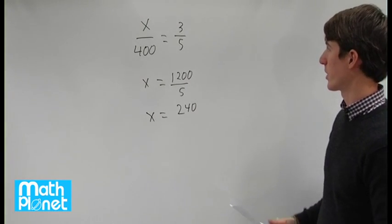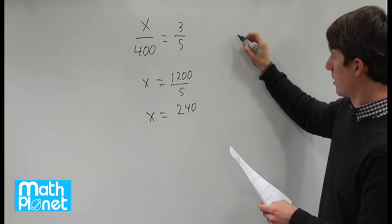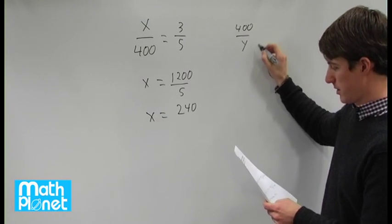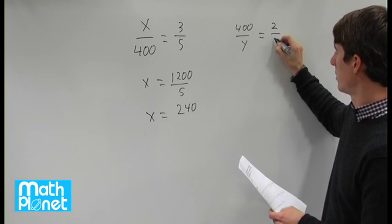We can do the same thing for the relationship with y. We have 400 to y is equal to 2 to 3.